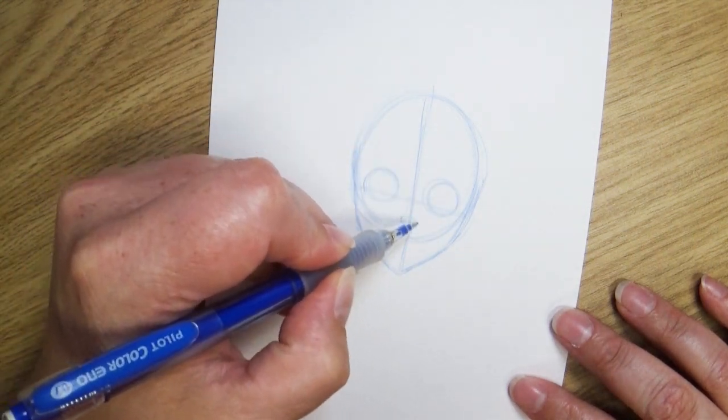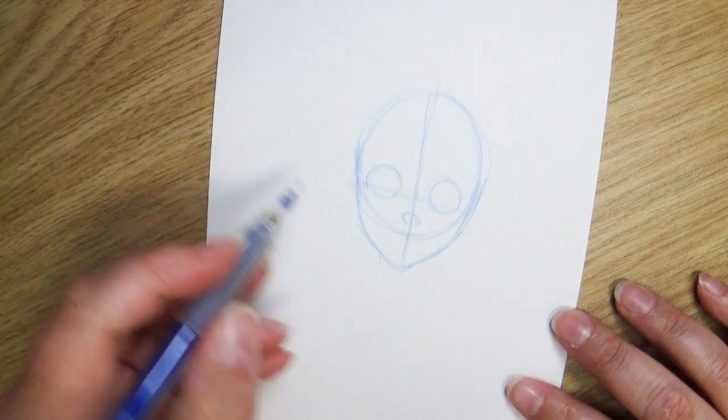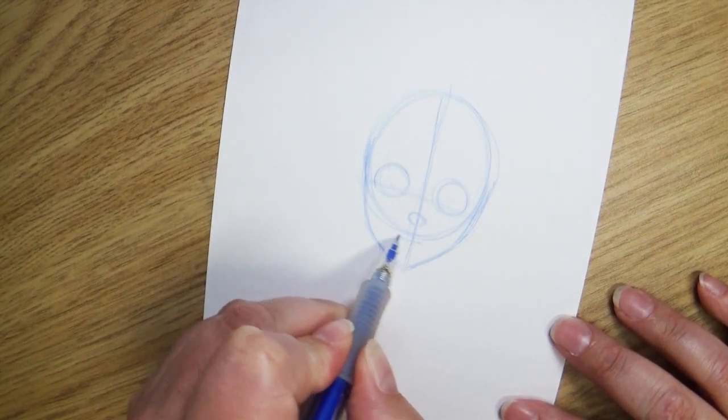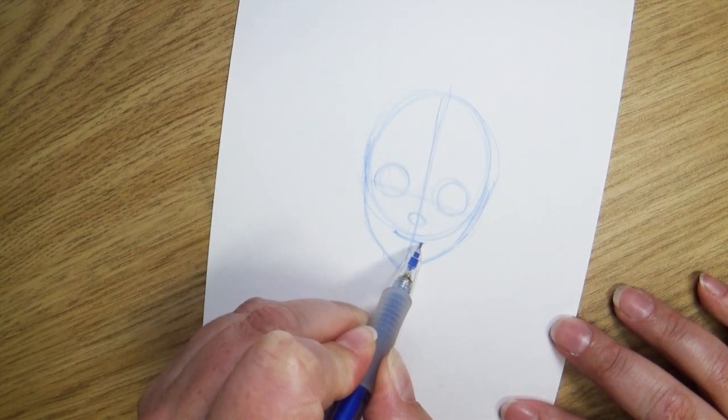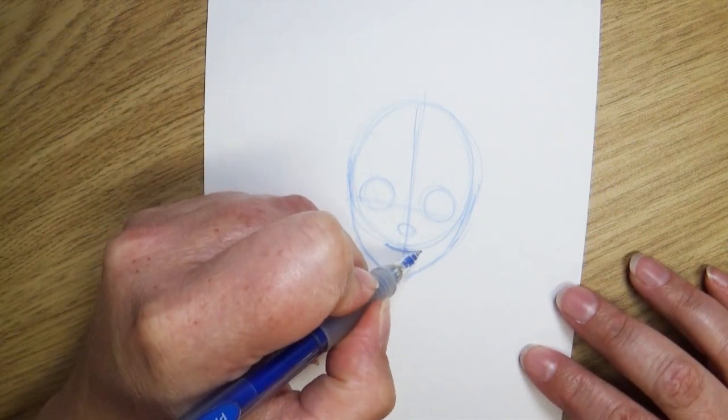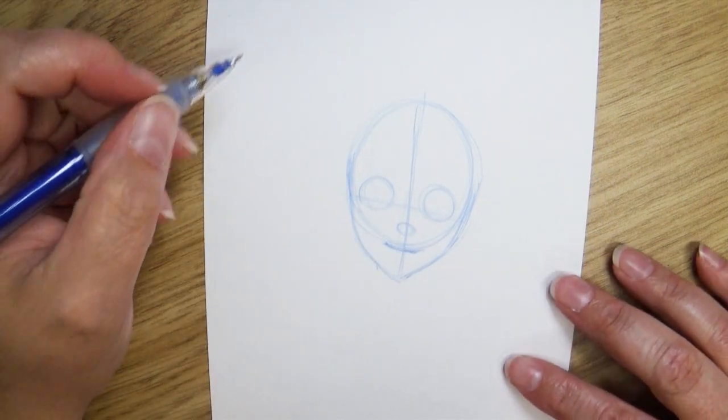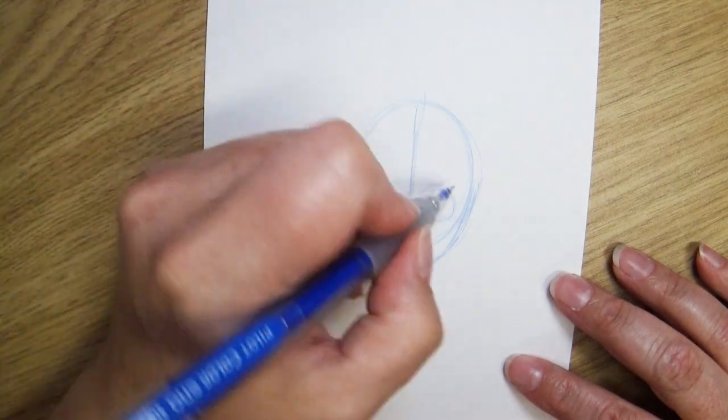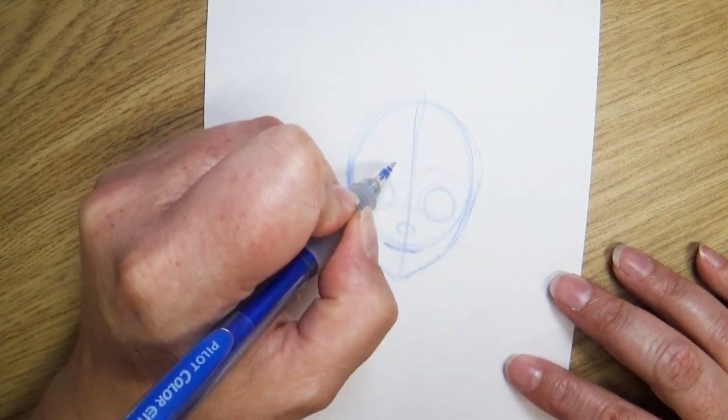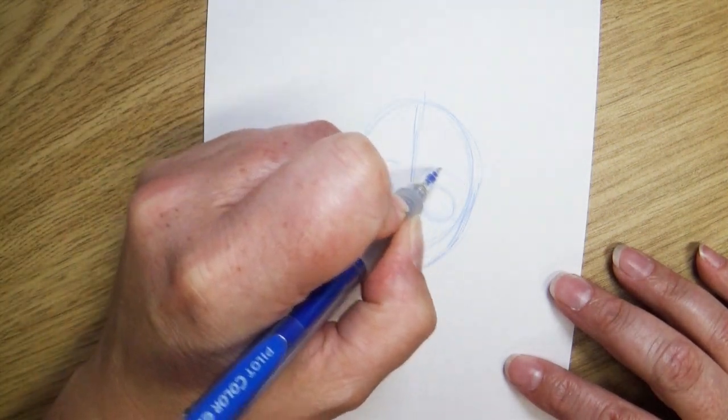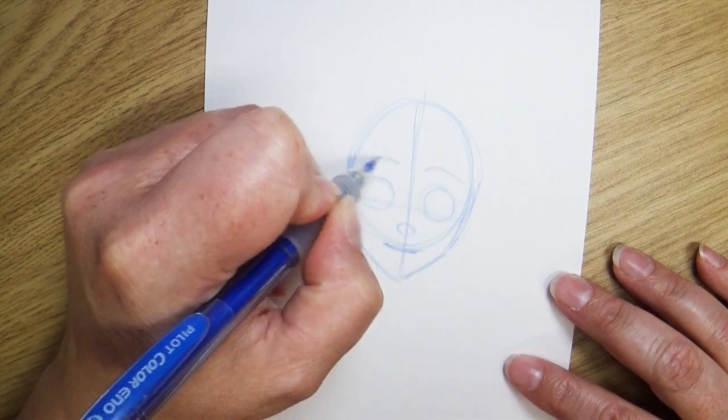But I'm going to block in some shapes for the eyes, the nose, and the mouth. Blocking things in before you start going in with the hard detail allows you to move things around or change them or to really step back and look to make sure your eyes aren't different sizes and things like that. But once you're happy with the way that things are looking now we can go in and start positioning the details.